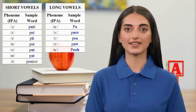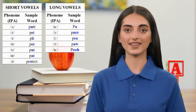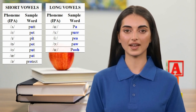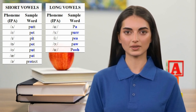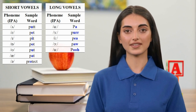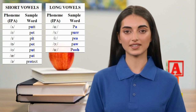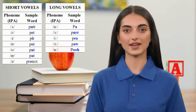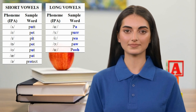So, let's begin with the monophthongs, or simple vowels. All phonemes from here onwards will be uniquely identified using symbols from the International Phonetic Alphabet, or IPA, delineated by slashes.